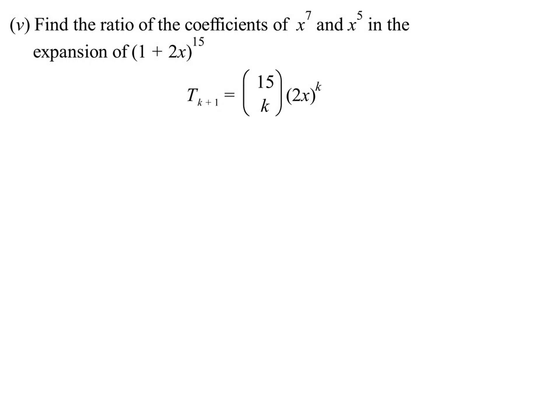But the 2x is to the power of k. So I want the ratio, the coefficient of x to the power of 7, to the coefficient of x to the power of 5. So I'm only interested in the coefficient. So on the top of the fraction, I've got 15C7, 2 to the power of 7. Bottom of the fraction, 15C5, 2 to the power of 5.